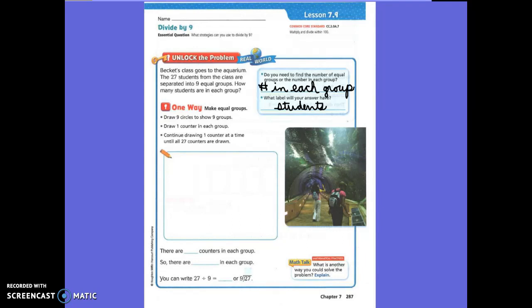So one way we can solve a problem like this, or any division problem, is by making equal groups. What's the first direction that they have for you? First bullet point. Draw nine circles to show nine groups. Let's do that. One, two, three, four, five, six... Okay, nine groups.